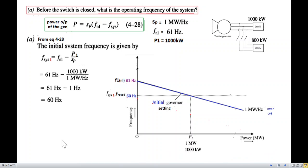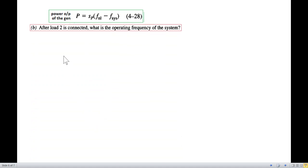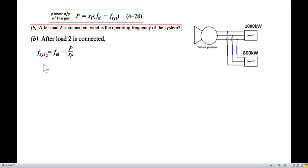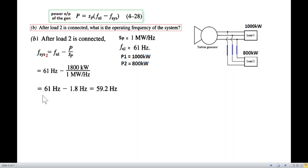Okay, the next question is, after load 2 is connected, what is the operating frequency? So as we mentioned that when we connect the load, the total load increases, and so will the frequency drop. So we have to calculate that frequency. Again, same formula, except that here we are writing it system 2, and this will be the new load, total load, adding these two. So these parameters, we have just added p2. And plugging in the values, p is now 1800. And the final answer is 59.2 hertz. So you saw that when the load is increased, the frequency or the operating frequency has dropped.